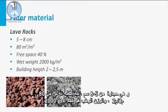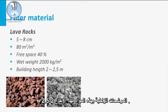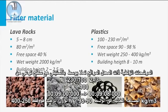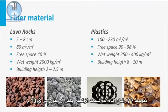Traditionally, lava rocks are used. These are 5 to 8 cm stones with a specific surface of 80 square meters per cubic meter. The wet weight is 2000 kg per cubic meter and the free space in the bed is about 40%. Trickling filters with this filling material have a height of 2 to 2.5 meters. High-rate trickling filters are filled with plastic with a specific surface of 100 to 230 square meters per cubic meter. The free space in the bed is 90 to 98% and the wet weight is only 250 to 400 kg per cubic meter, so the average height of such a trickling filter can be 8 to 10 meters.